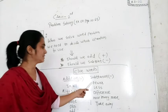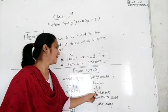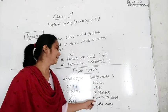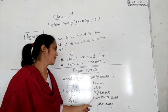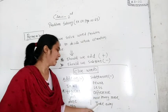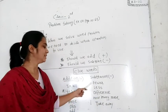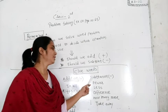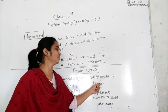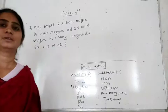And the next set of words is: fewer, less, difference, how many more, and take away. If these words are in the problem, you have to do the subtraction.